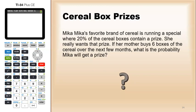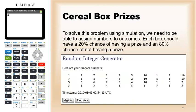Good question. We can work this out with the formulas, but let's try this with simulation. To solve this problem using simulation, we need to be able to assign numbers to outcomes. Each box should have a 20% chance of having a prize and an 80% chance of not having a prize.